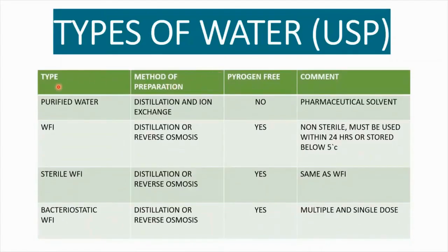In this we are going to discuss about types of water, then method of its preparation, then pyrogen — whether it is pyrogen free or not — and then comment on that particular type of water. The first type of water is purified water, which is prepared by distillation and ion exchange method. Pyrogen is not present in purified water. Pyrogen is a fever-causing agent, and in purified water it is absent.